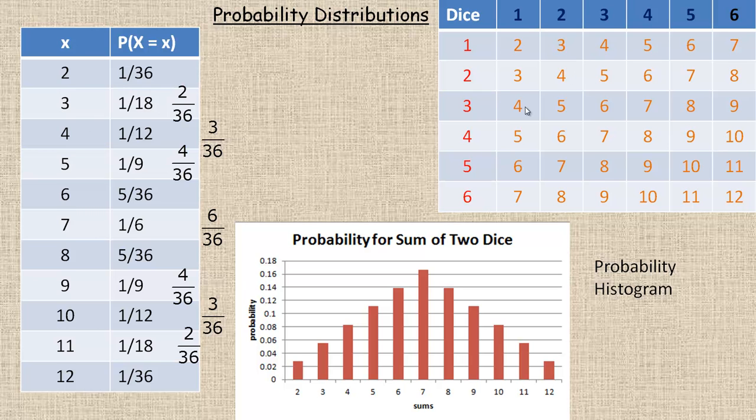The sum of four can happen in three ways. We could have a three and a one, a two and a two, or a one and a three. So there's three chances in 36 of getting a sum of four, which reduces to 1/12.